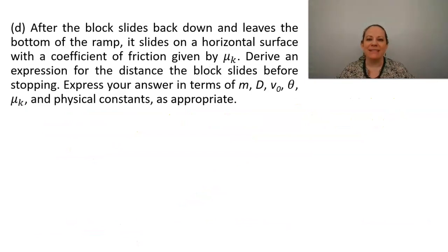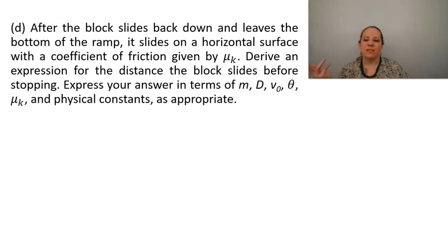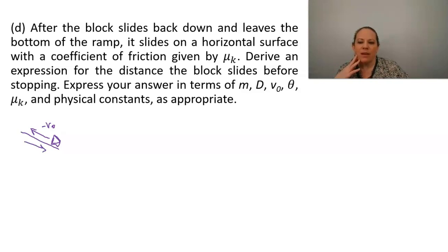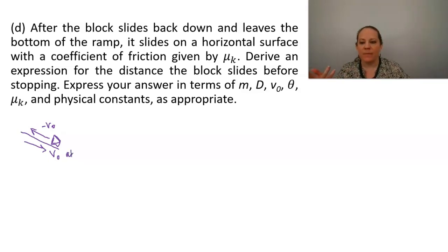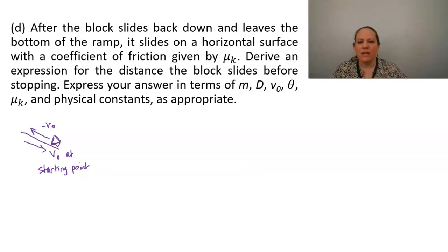Part D: after the block slides back down and leaves the bottom of the ramp, it slides on a horizontal surface with a coefficient of friction given by mu k. Derive an expression for the distance the block slides before stopping. Express your answer in terms of m, d, v naught, theta, mu k, and physical constants as appropriate. When our block goes up the ramp at negative v naught and comes back down, it's going to have a velocity of v naught when it returns to its starting point. So our block has an initial velocity of v naught when it enters the horizontal portion of the problem.